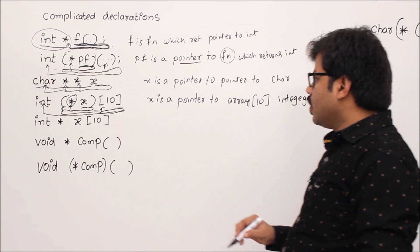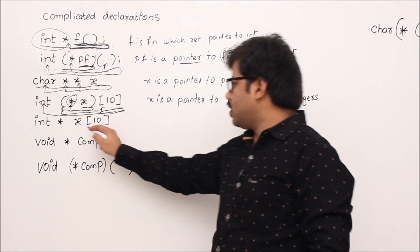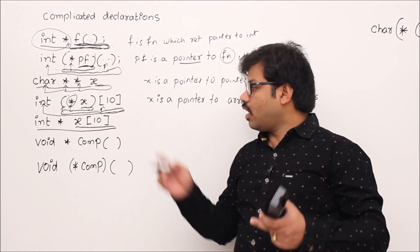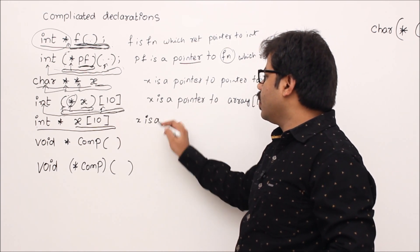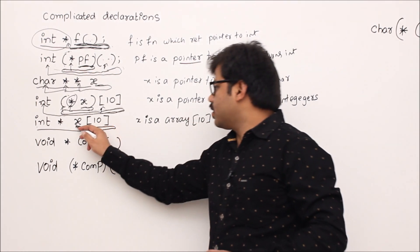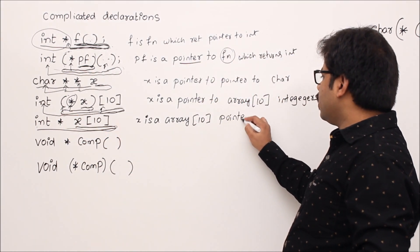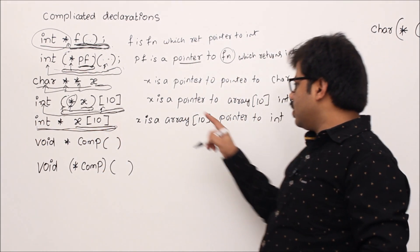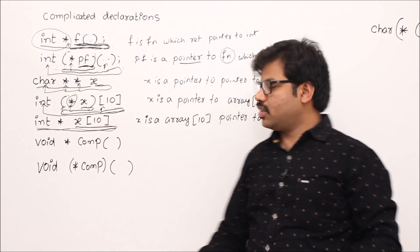Now: 'int *x[10]'. Stop the video and try it yourself first. Start at x, go right: array symbol — 'x is an array of 10.' Go leftmost: star means pointer to. Continue left: int. So 'x is an array of 10 pointers to integers.'